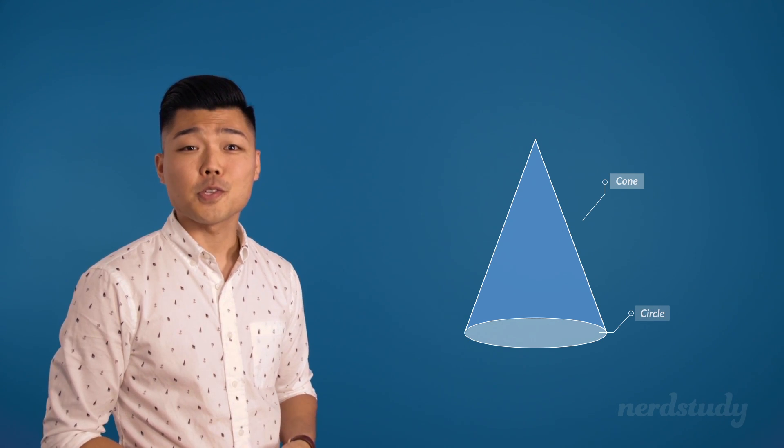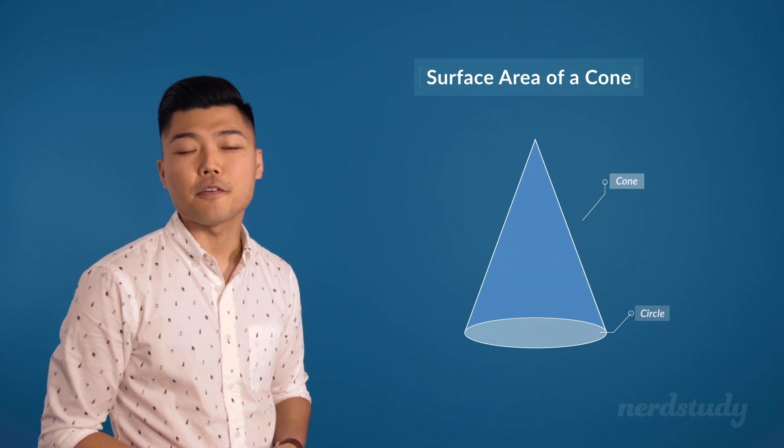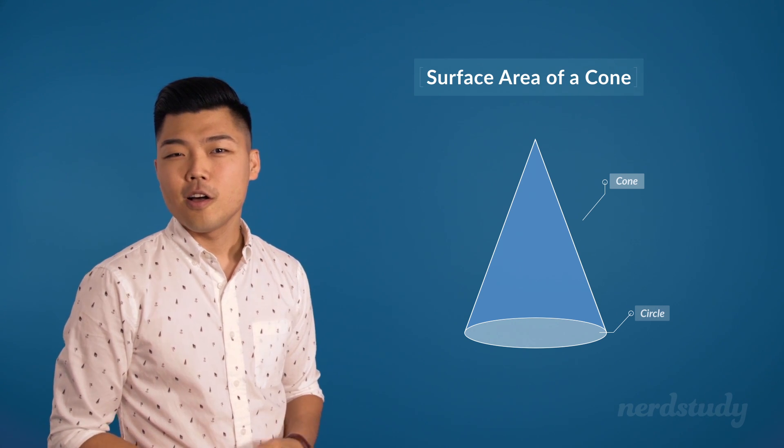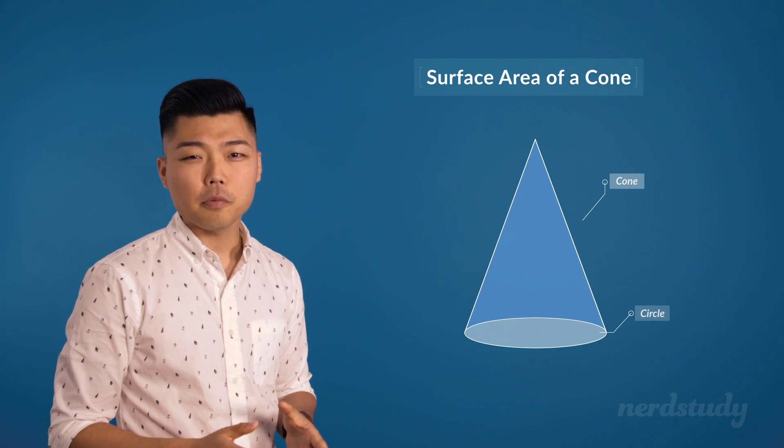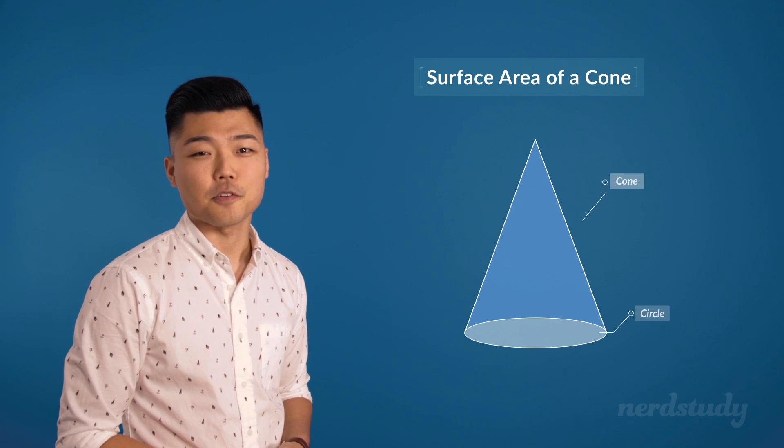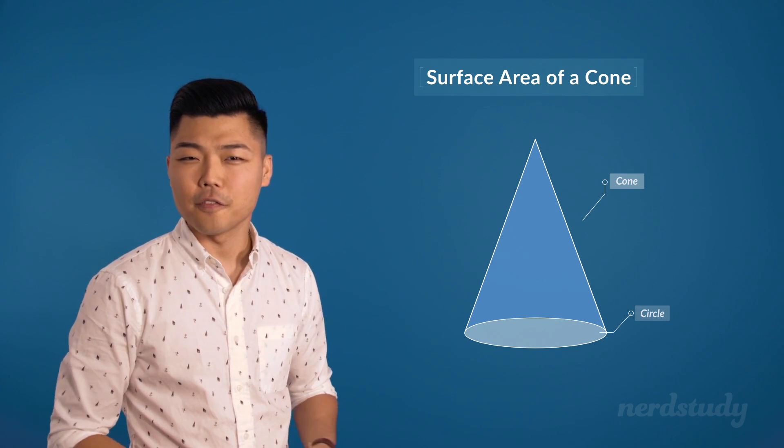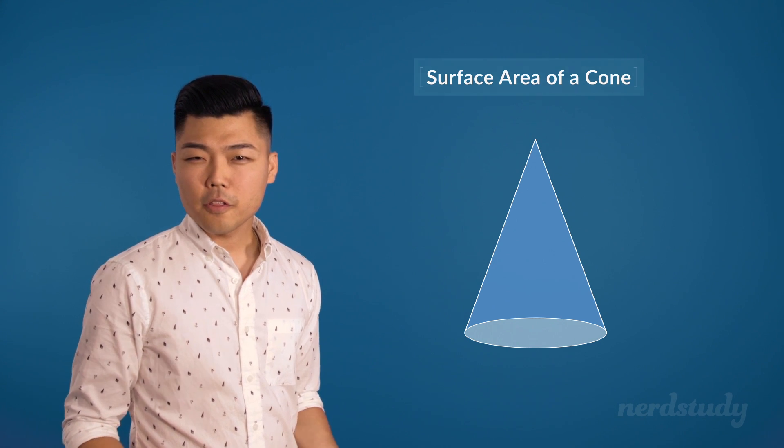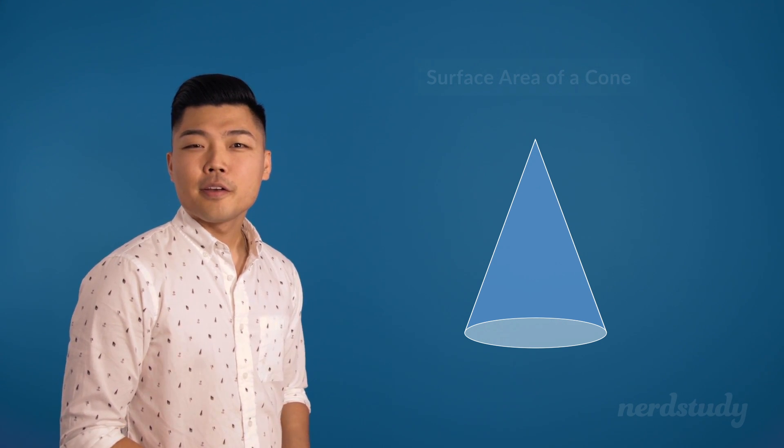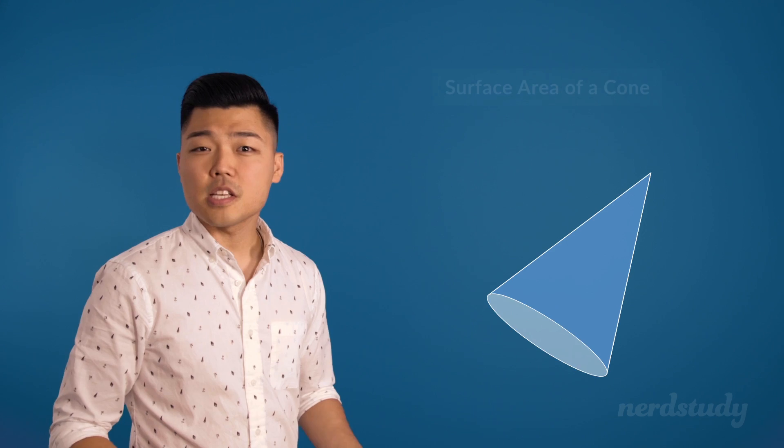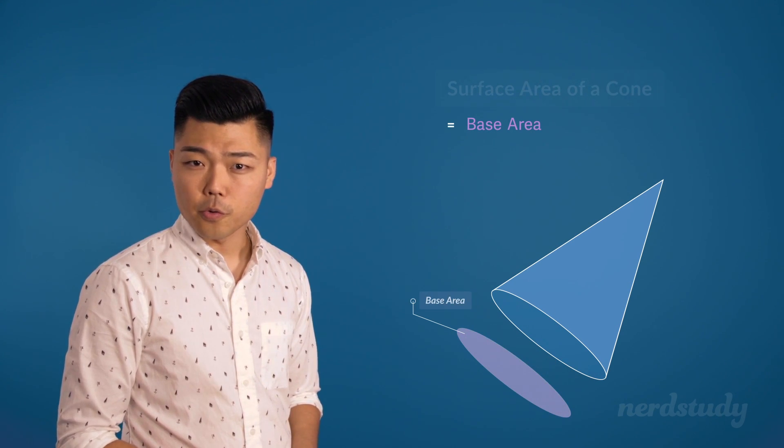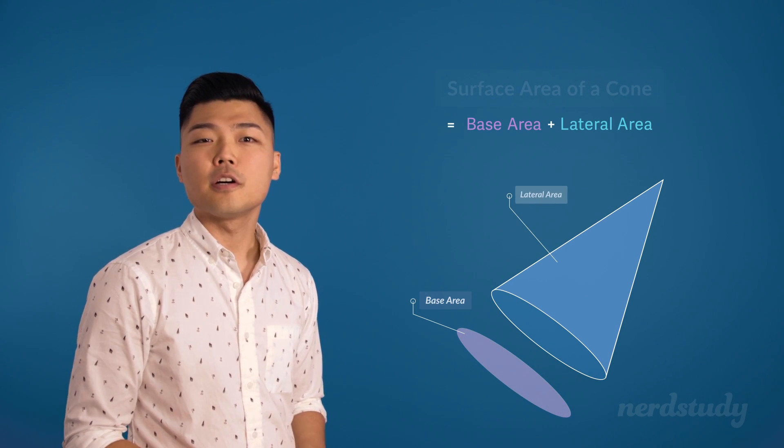And yes, this circle is also part of the surface area of the cone. Alright, so the question you've probably been begging to know the answer for is, how do we find the surface area of a cone? Well, the formula is simple.